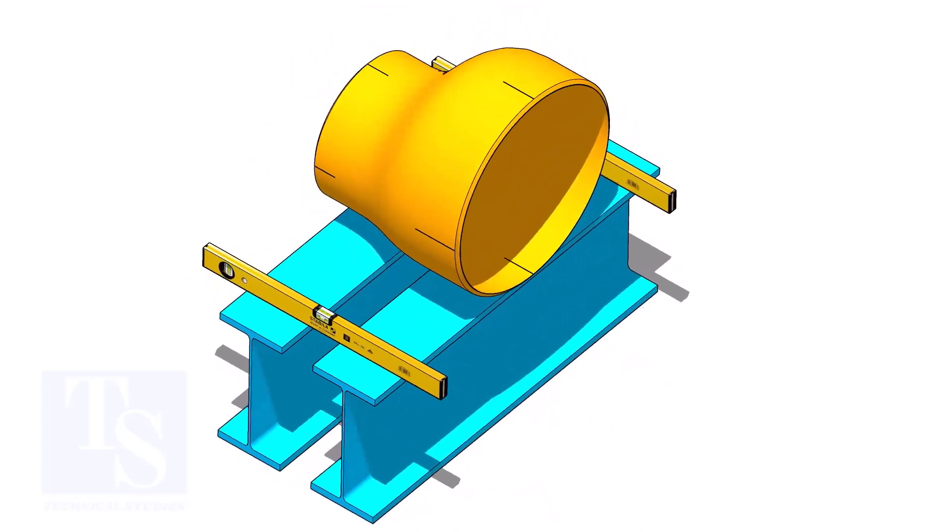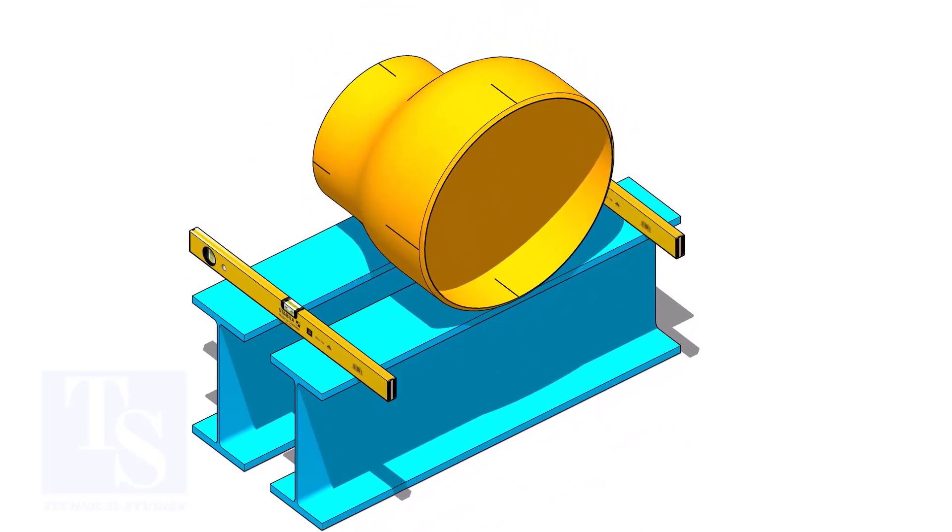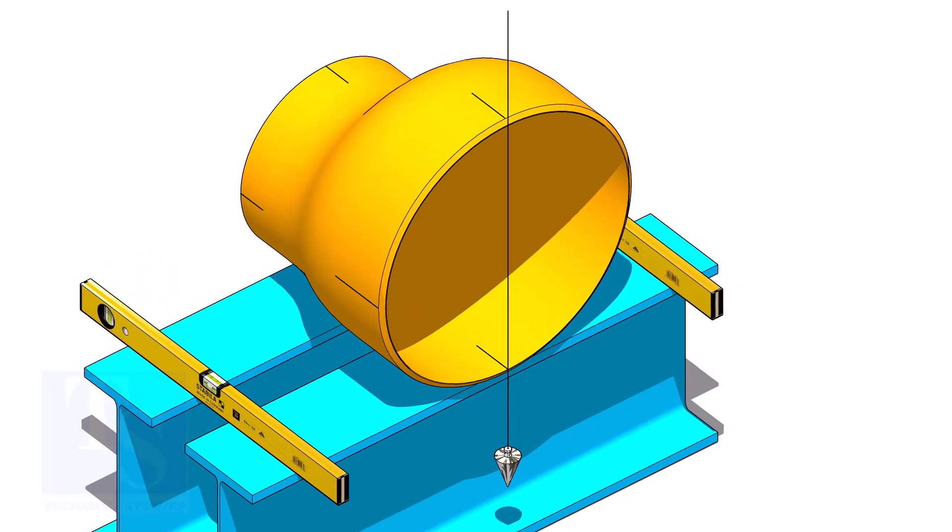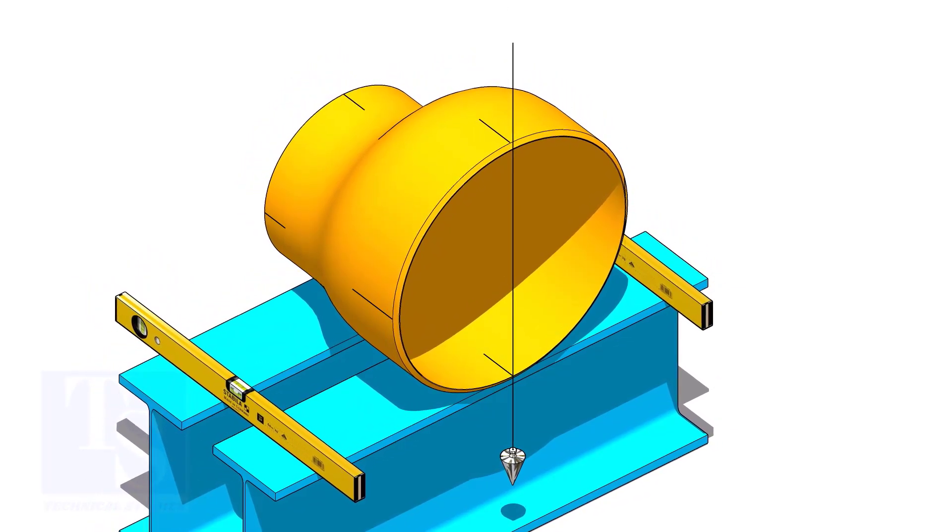Put the reducer on supports. Plumb the reducer and put packing on both sides.